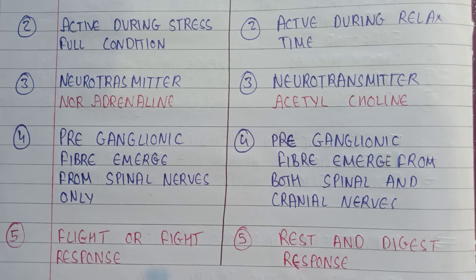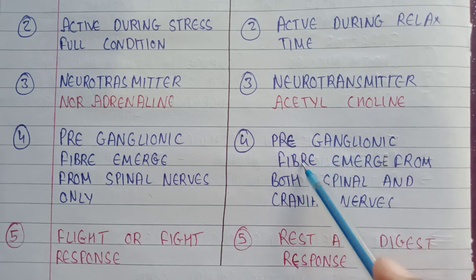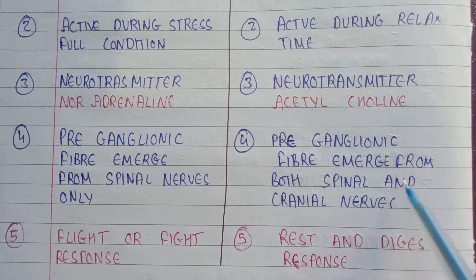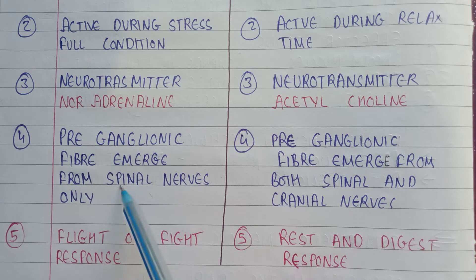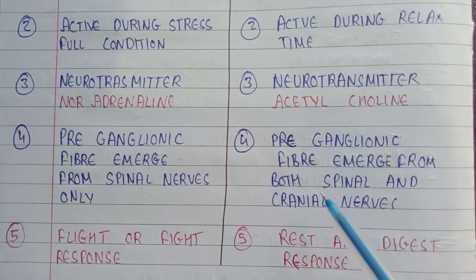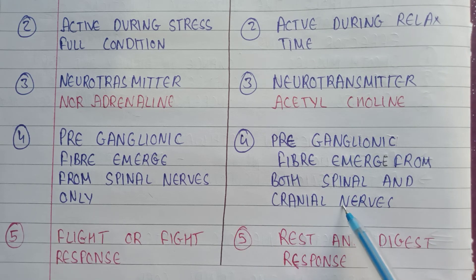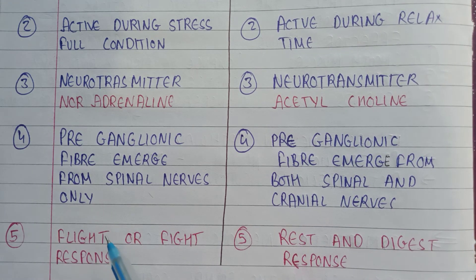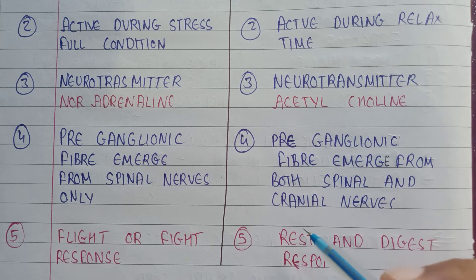Another point of difference is that in the sympathetic nervous system preganglionic fibers emerge from spinal nerves only, whereas in the parasympathetic nervous system preganglionic fibers emerge from both spinal nerves and cranial nerves.